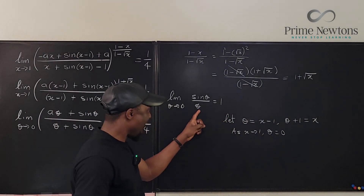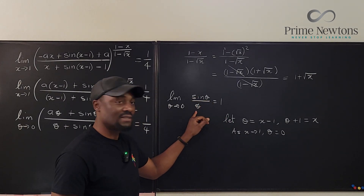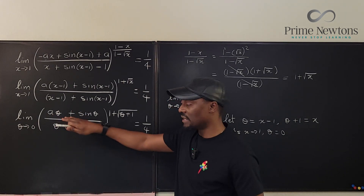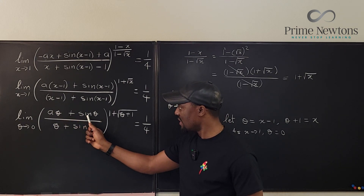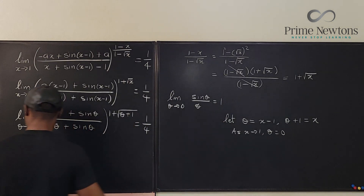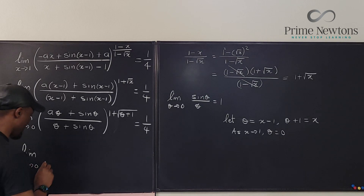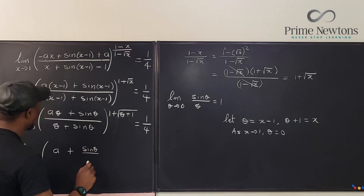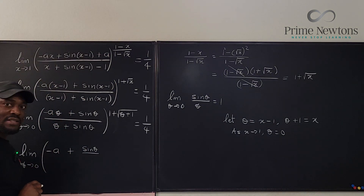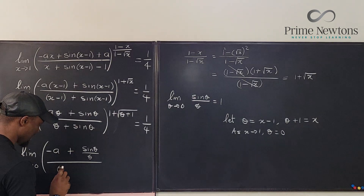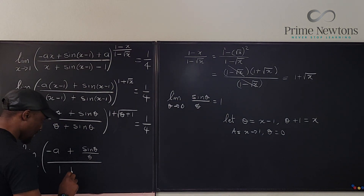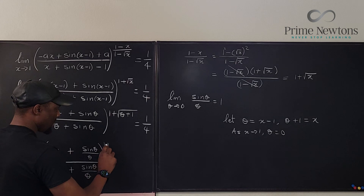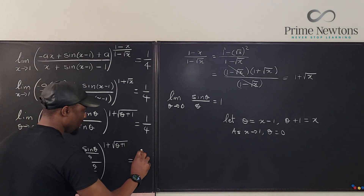One more thing: I need to apply the sinθ/θ identity, so I'm going to divide everything — top and bottom — by theta. Dividing top and bottom by the same thing doesn't change the value. After dividing each term by theta, I end up with the limit as theta goes to 0 of: a minus sine theta over theta, over 1 plus sine theta over theta, and everything is raised to 1 plus square root of theta plus 1, all equal to 1 over 4.